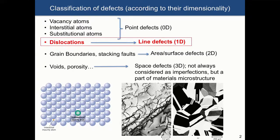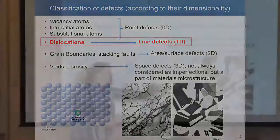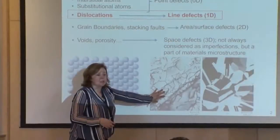The density of dislocations can be really, really high. In practice, in metals, there are many, many dislocations. We will learn how we quantify the amount of dislocations and how we describe the magnitude of the deformation. A typical metal will show many, many dislocations.